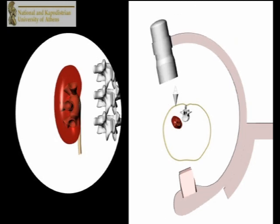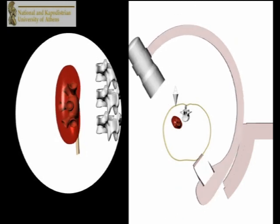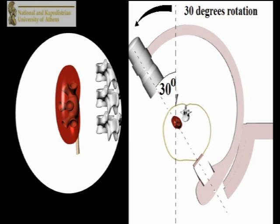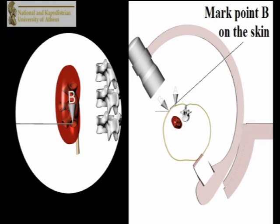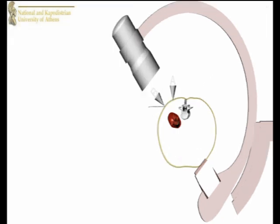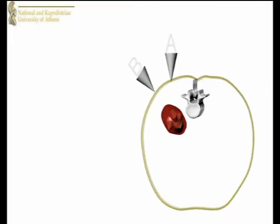This plane defines the medial extent of needle penetration for access to the desired calyx. The C-arm is then rotated 30 degrees towards the surgeon for an end-on view of the posterior group of calyces.